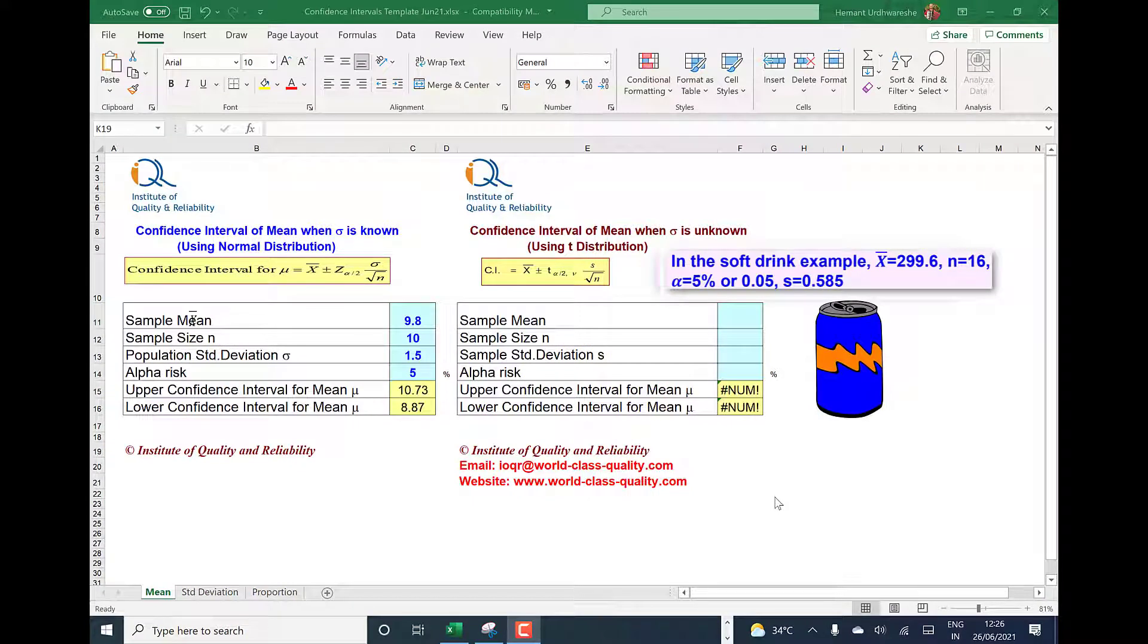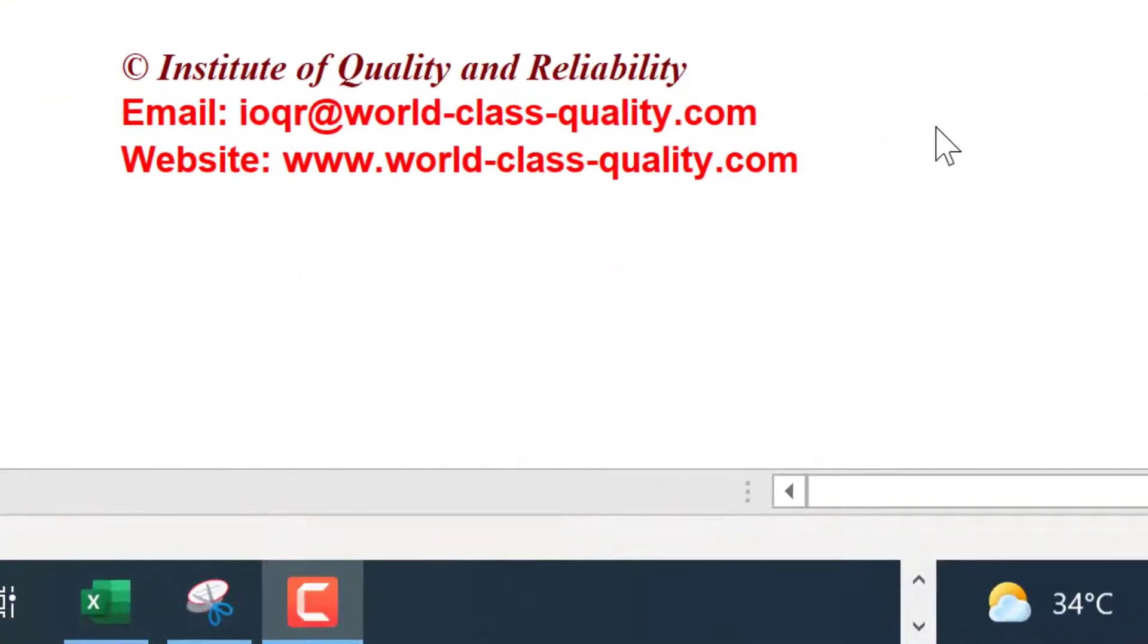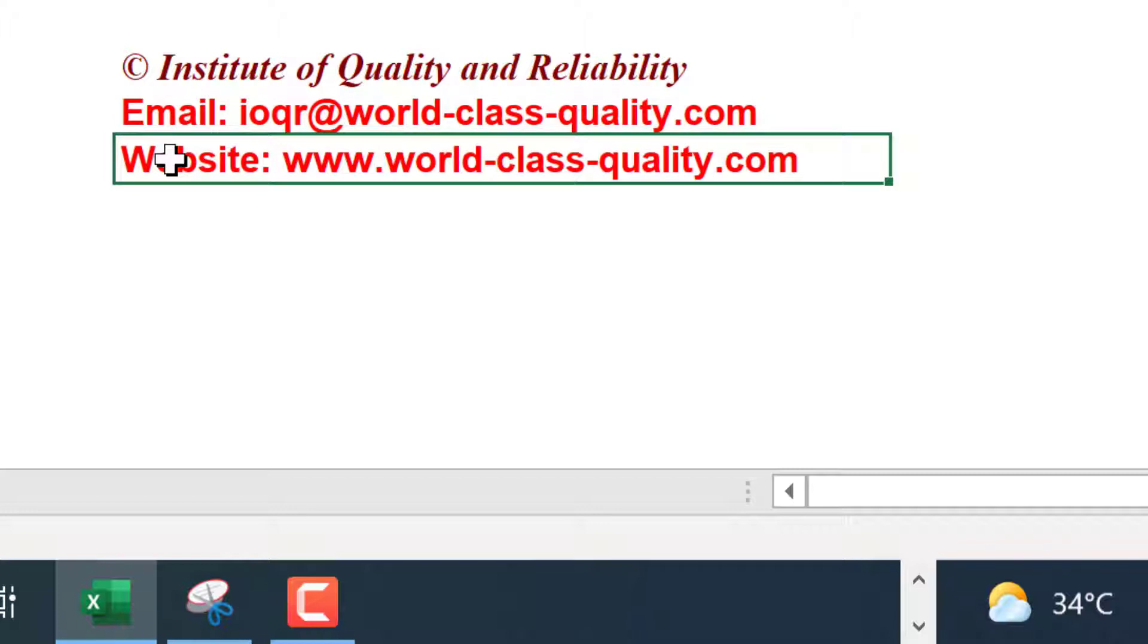We can also use template from Institute of Quality and Reliability. Please write to us on this email id to get the template. Or you could also visit our website www.world-class-quality.com and click on contact us and write a mail to us about this template.